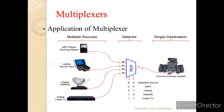Now let us see one simple application of a multiplexer. We have taken a 4-to-1 MUX with four inputs and one output. For these four inputs, we have two select lines represented by B and A. Depending upon the combination of B and A, the respective input is selected. When B and A are 00, MP3 is selected; 01, laptop is selected; 10, satellite is connected; and when it is 11, it is connected to cable TV. So depending upon the select line configuration, that particular input is connected to the output — the sound system.